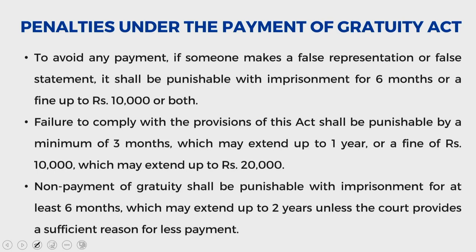Let us understand the penalties under the Payment of Gratuity Act. The violation of the provisions of the Act shall entail certain penalties as stated in section 9 of the Act. When you look into the penalties: to avoid any payment by making a false representation or false statement shall be punishable with imprisonment for six months or a fine of up to rupees 10,000, or both.